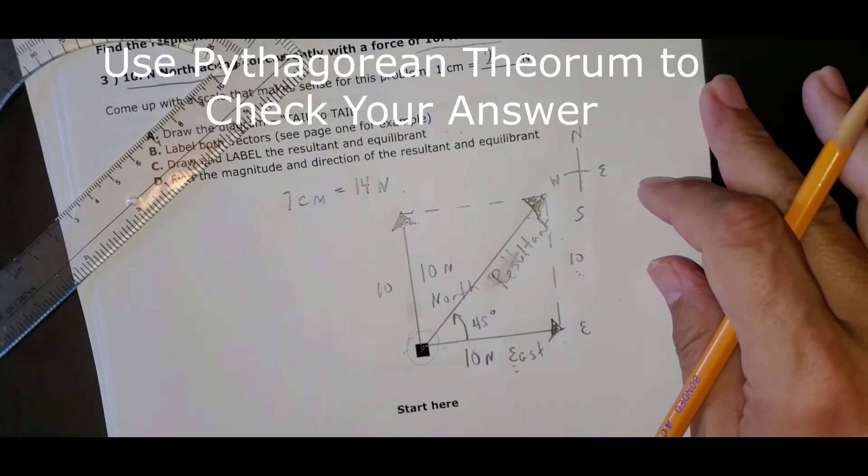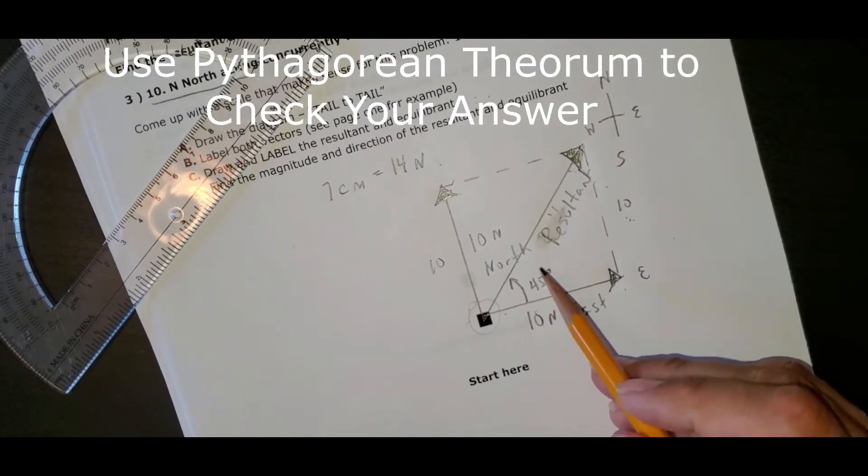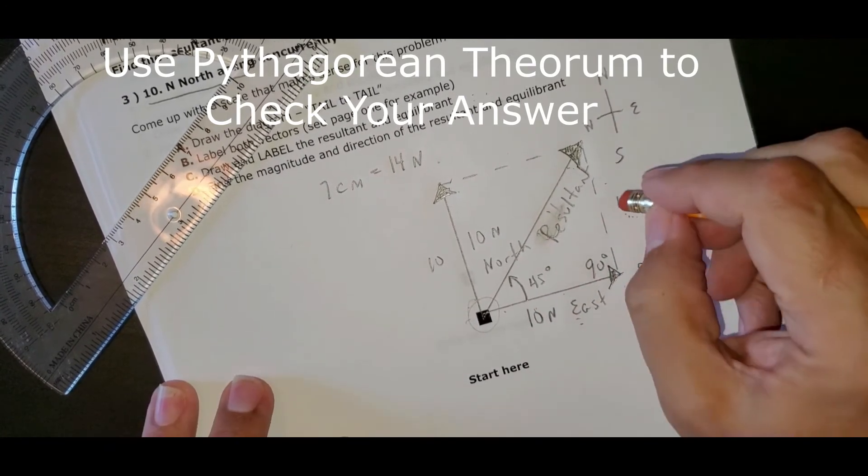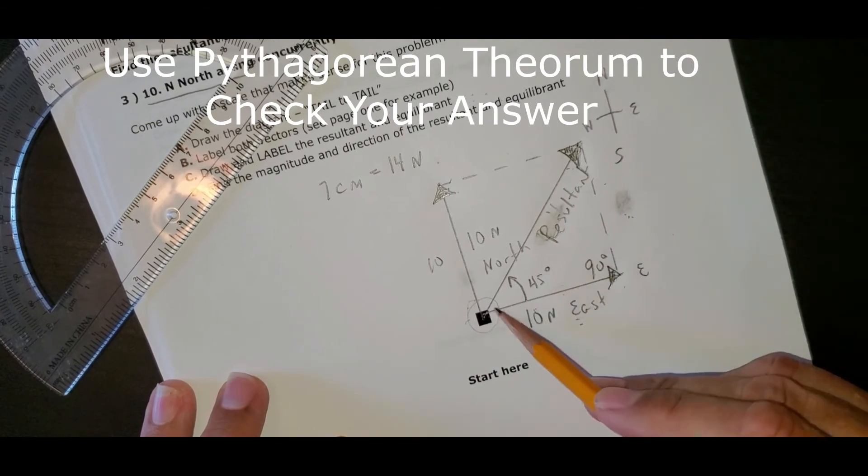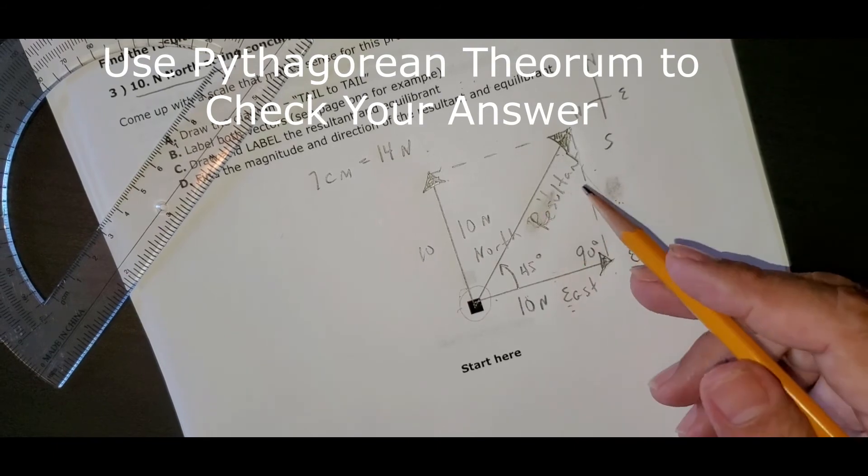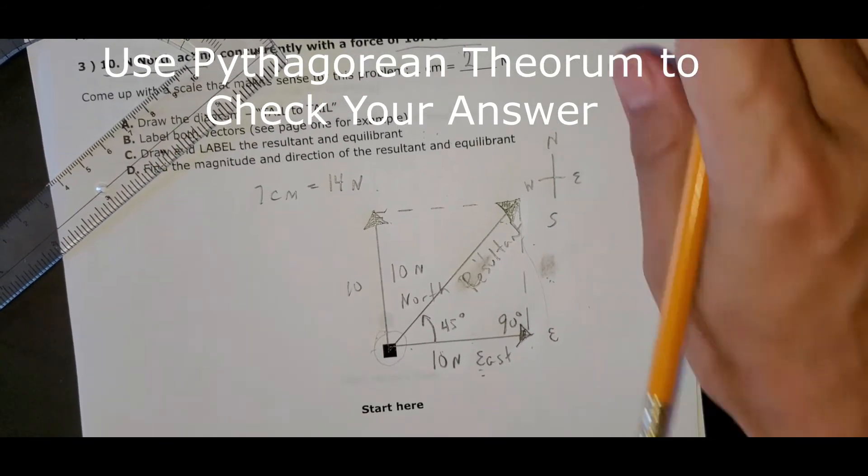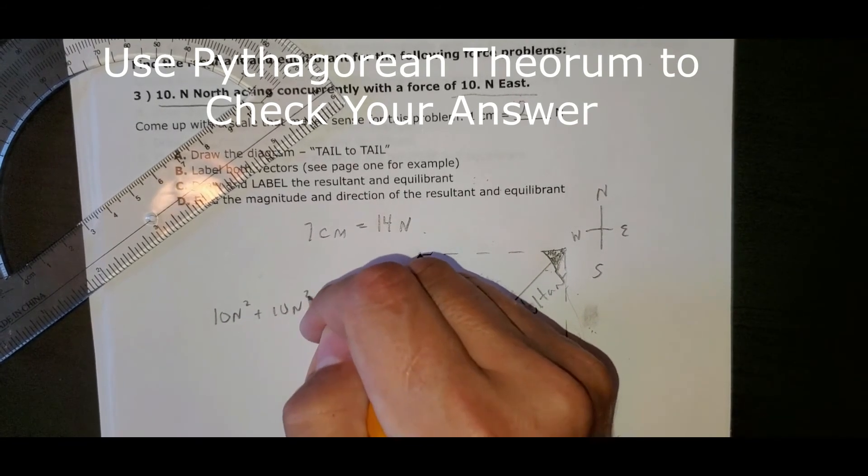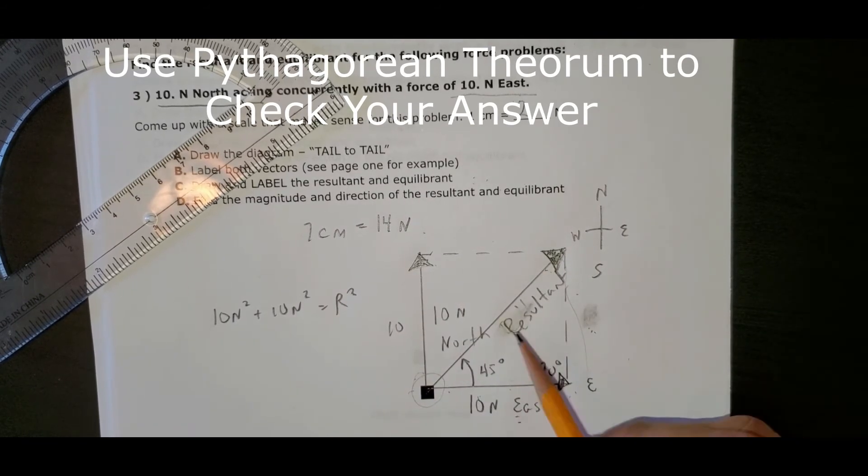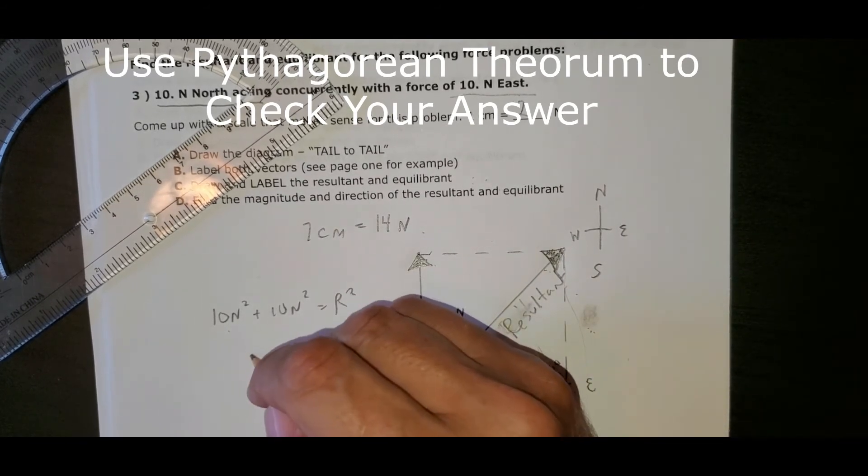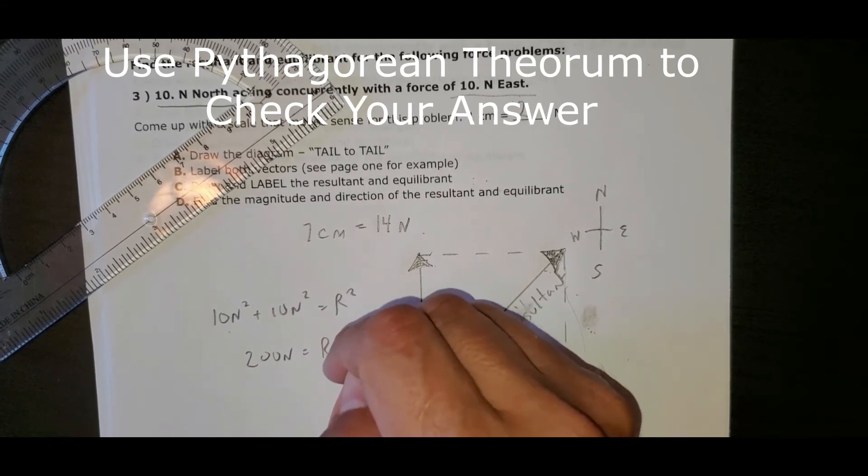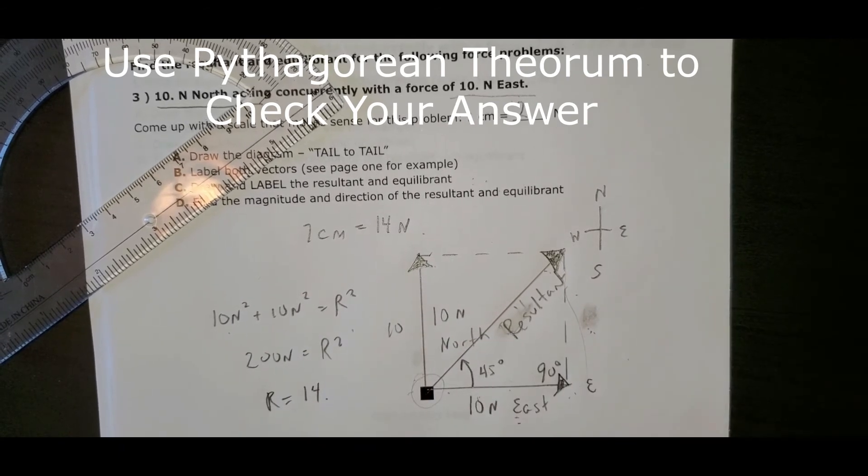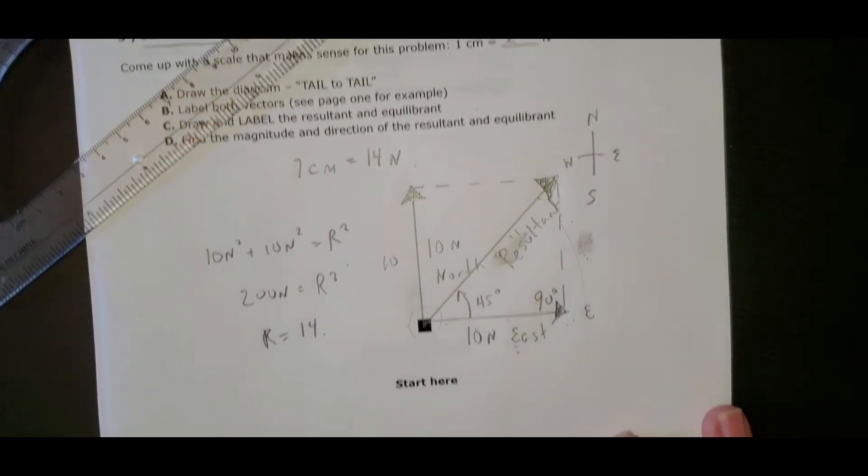Here's a double check that we did our picture right. This is a 90 degree right triangle over here. We have a right triangle, and the hypotenuse is the resultant. So let's double check that I did everything right. 10 newtons squared plus 10 newtons squared equals r squared. This is your right triangle, where r is the resultant. 100 plus 100, that's 200 equals r squared. And the square root of 200 is actually about 14, just a little over 14. So pretty good.